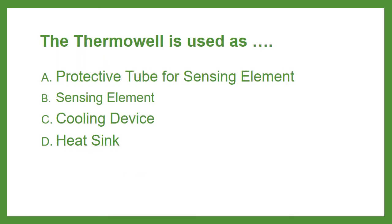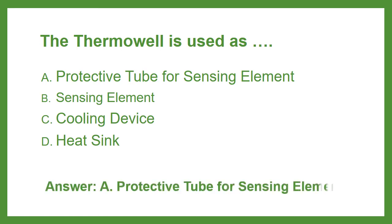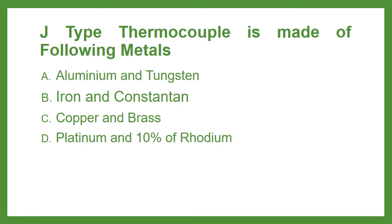The thermowell is used as: Option A Protective tube for sensing element, Option B Sensing element, Option C Cooling device, or Option D Heat sink. The answer is Option A: Protective tube for sensing element.